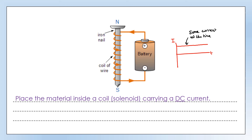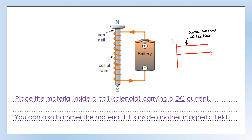The final way to magnetize a material is quite basic — you can hammer it, which literally means getting out a hammer and hitting it. We place the material inside another magnetic field and then hammer it, which allows the domains to move and line themselves up with that external magnetic field. So those are our three methods of magnetization.